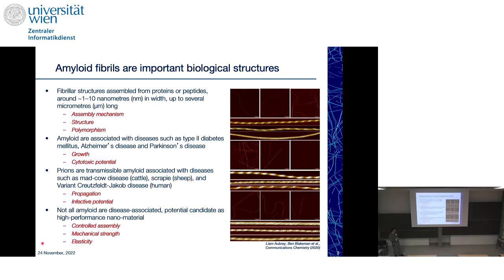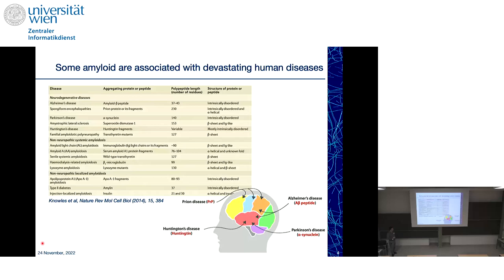People in that field often call amyloid fibrils 'protein nanofibrils' rather than amyloid, because the media immediately associates amyloid with disease, even though many amyloids are not disease-associated. So this is a very big area. Some amyloid structures are associated with devastating human diseases like Alzheimer's, Parkinson's, and prion diseases like CJD — at least three prion structures have been confirmed to have the amyloid cross-beta structure. So they are definitely a very important class of disease.